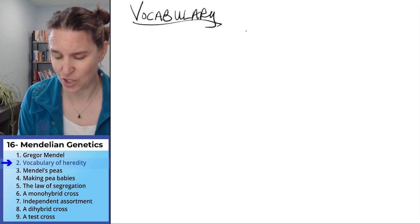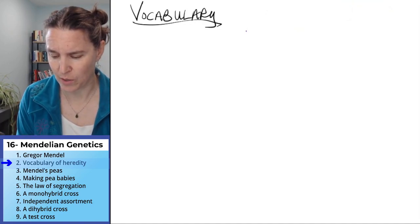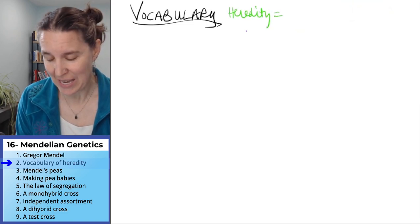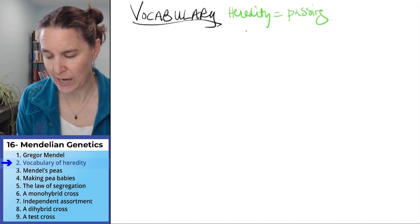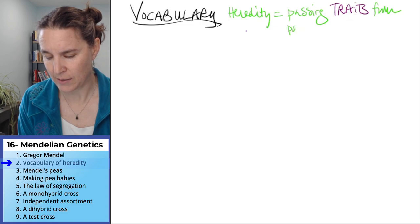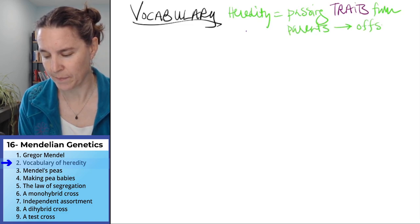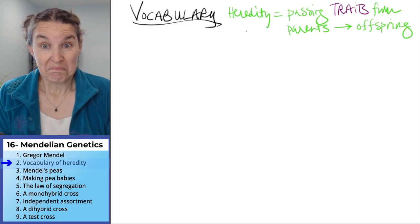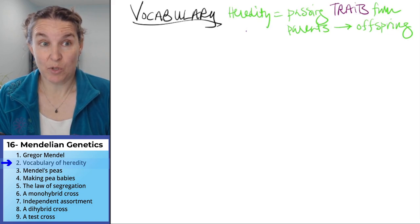Our first definition is just to deal with the word heredity. And all that is, is passing traits from parents to offspring. That's super straightforward.